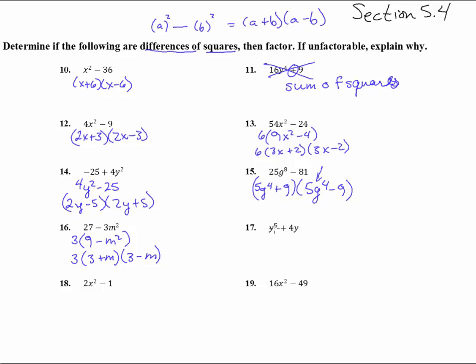What about this one? Well, we can take a y out. So we get a y to the 4th plus a 4. And then this guy right here cannot go any further. It could have if that was a minus sign, but it can't. This from right here is the sum of squares. And that can't go anywhere at all.